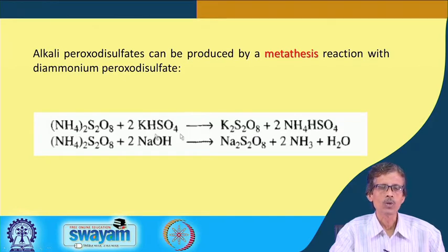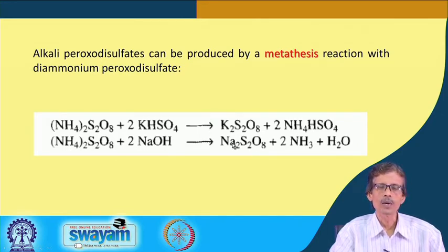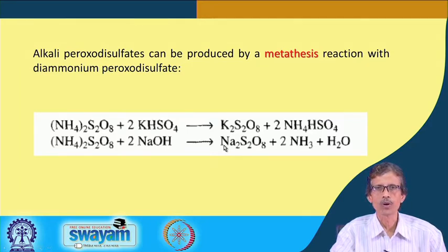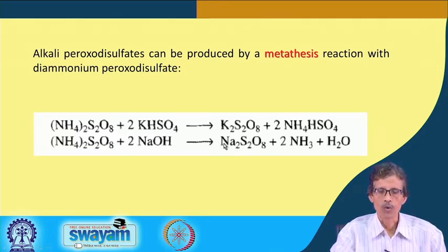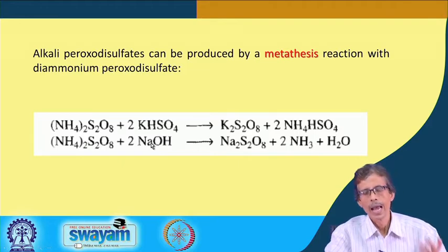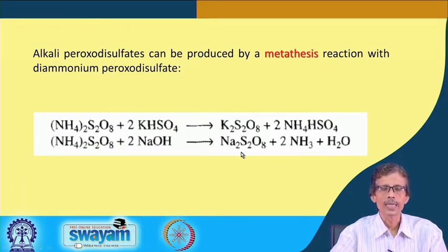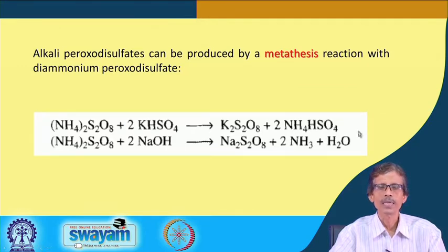Potassium bisulfate reacts with diammonium peroxodisulfate to produce K2S2O8 and ammonium bisulfate as the other product. Similarly, for sodium peroxodisulfate — the industrially important sodium salt, which is sometimes preferred over the potassium salt due to different reactivity or solubility patterns — the medium is made highly alkaline with sodium hydroxide. The same ammonium peroxodisulfate then metathetically produces Na2S2O8, with liberation of ammonia and water in the form of ammonium hydroxide.